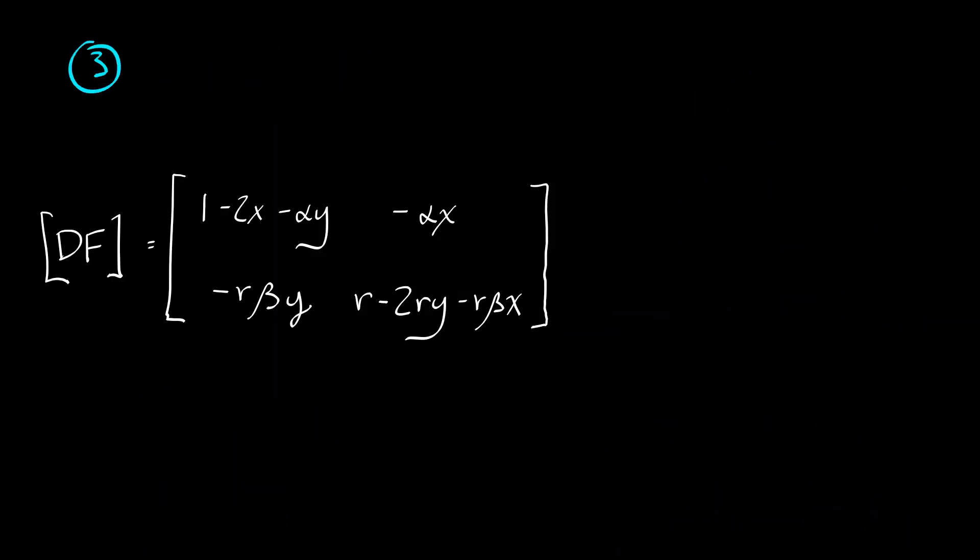The situation at the third equilibrium at 0, 1 is perfectly analogous. Evaluating the derivative there gives us the matrix 1 minus alpha, 0, negative r times beta, negative r. This again is a triangular matrix. We can see that the eigenvalues are 1 minus alpha and negative r. One of those is definitely negative. The other depends on alpha.